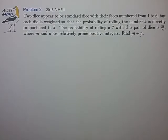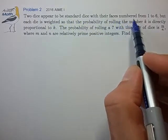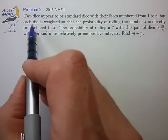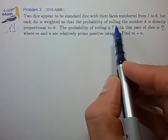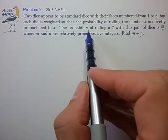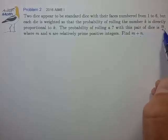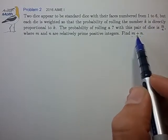Hi, this is problem 2 from the 2016 AIME. Two dice appear to be standard dice with their faces numbered 1 to 6, but each die is weighted so that the probability of rolling the number k is directly proportional to k. The probability of rolling a 7 with this pair of dice is the reduced fraction m over n. Find the sum m plus n.